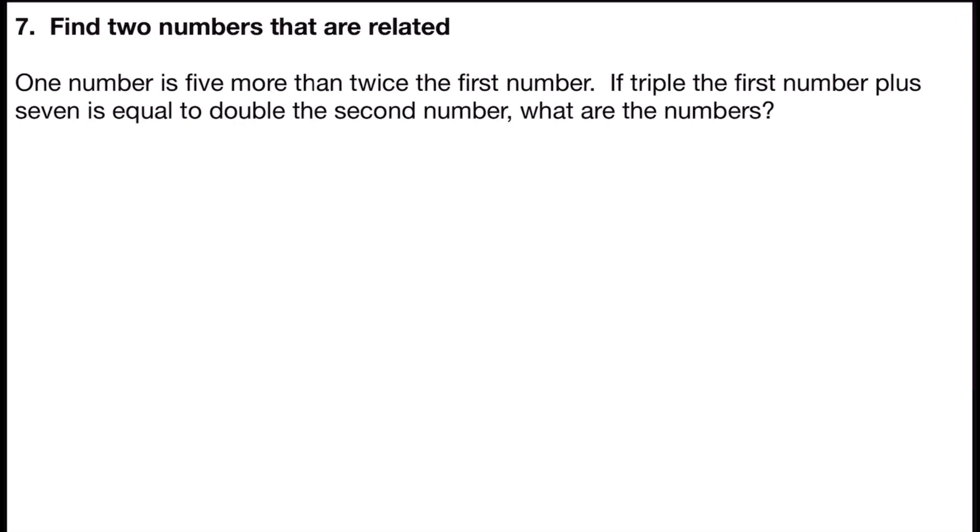Problem number seven asks you to find two numbers that are related. It says one number is five more than twice the first number. If triple the first number plus seven is equal to double the second number, what are the numbers?